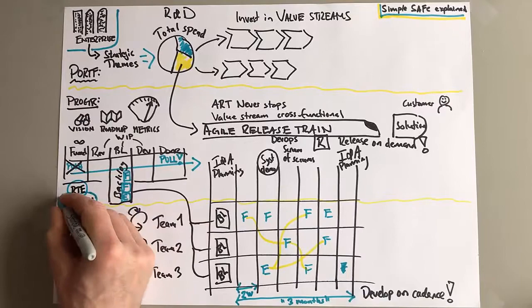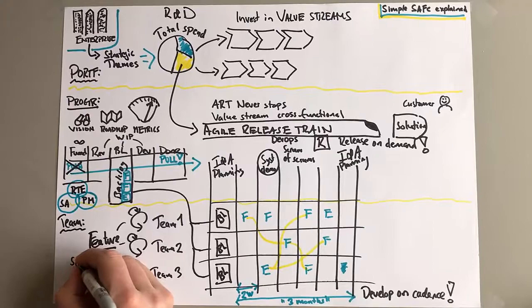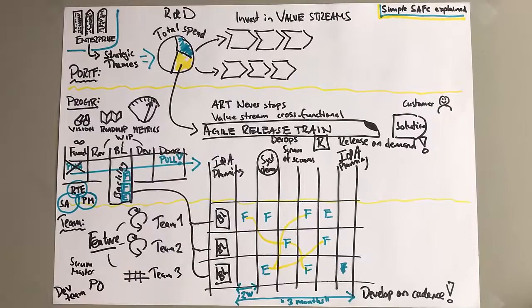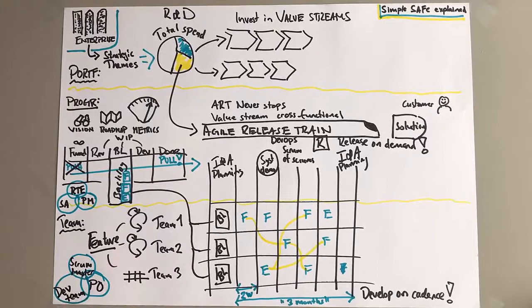Now people - on the program level you have a program management team, so we call it that. But you have the trinity of responsibilities here: a Release Train Engineer which is a sort of program manager, you have a Product Management which is a sort of a business owner for the program and the release train, and you have a Solution Architect with the overall responsibility for architecture and technical practices and those kind of things.